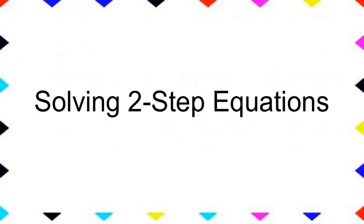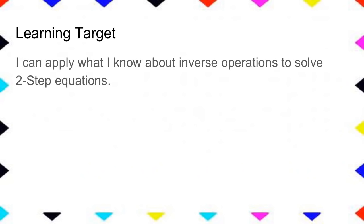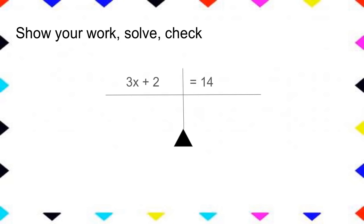Today's lesson is about solving two-step equations. Your learning target says: I can apply what I know about inverse operations to solve two-step equations. Here is our first problem — write it down in your notebook. Remember that this variable wants to be alone. Right now it's being bothered by these two numbers, and so those numbers have to go so that my variable is by itself.